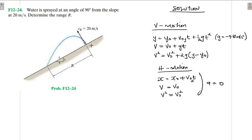We have this problem on an inclined slope. There is a jet of water being sprayed at an angle of 90 degrees to the slope or plane. What we need to do is find the components of this initial velocity in the x and y coordinates. We'll still use our coordinate system — plus x, plus y, like so.